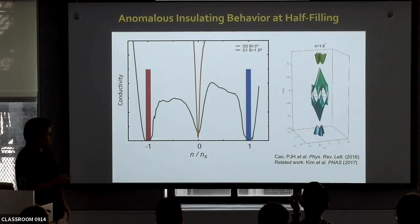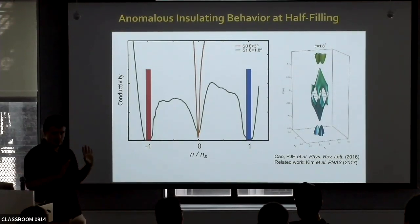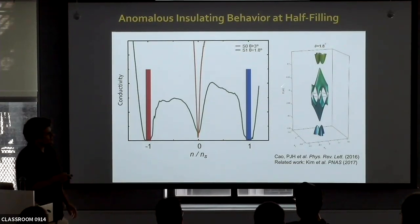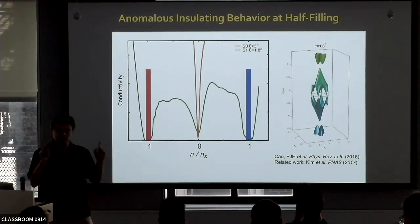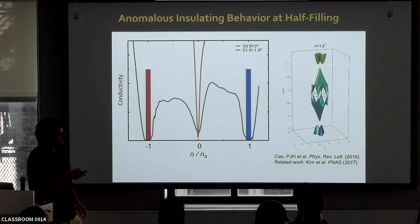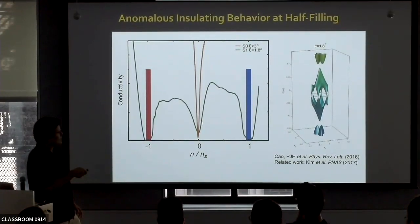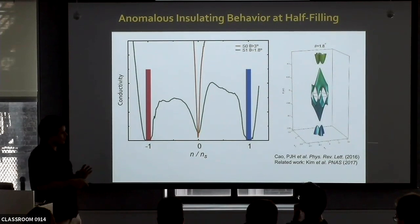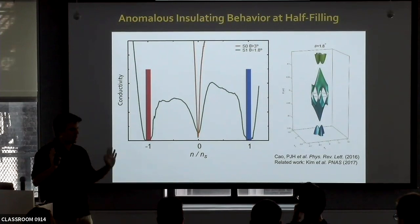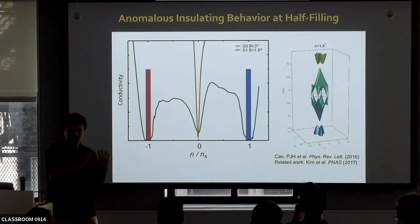At 1.8 degrees you have bands with lower Fermi velocity, separated by band gaps from the remote bands. Near charge neutrality, you still have V-shaped conductivity because it looks just like graphene. But as you increase your Fermi level to the top of the band, you reach the band gap and your conductivity goes to zero when you completely fill this band with four electrons per moiré unit cell. This insulating behavior at full filling or full emptying of these flat bands is a single-particle effect, though interactions affect it.